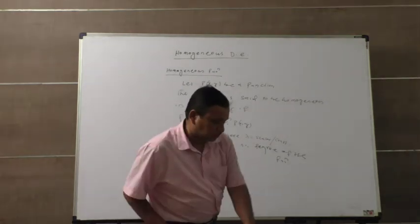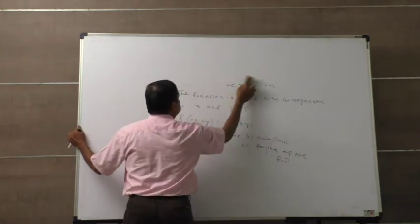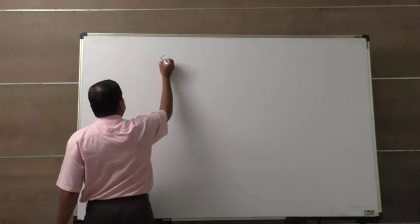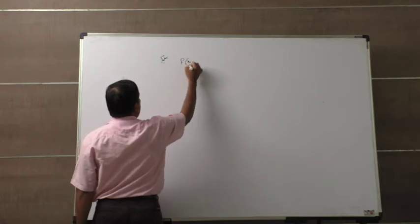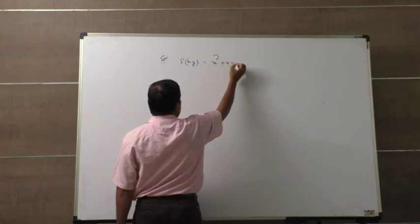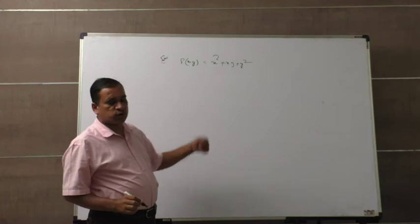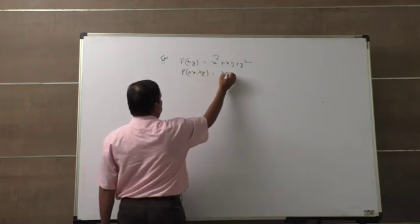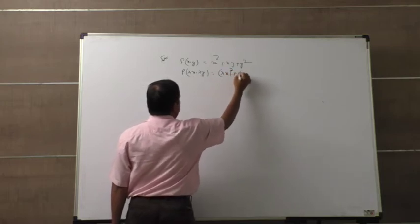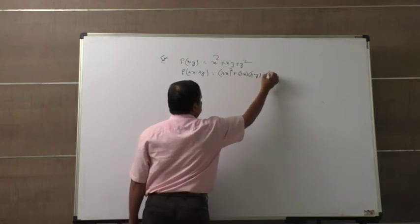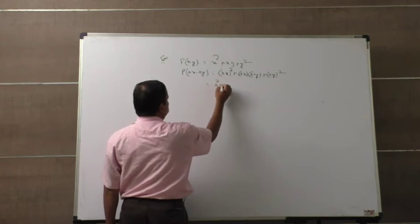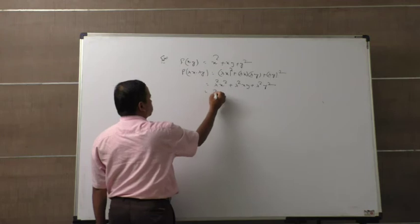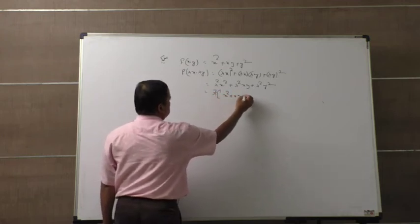Now take an example. Suppose we have f(x, y) = x² + xy + y². This is a function of two variables. Now put λx in place of x and λy in place of y. Then this becomes (λx)² + (λx)(λy) + (λy)², which equals λ²x² + λ²xy + λ²y². Taking λ² as common, we get λ²(x² + xy + y²).